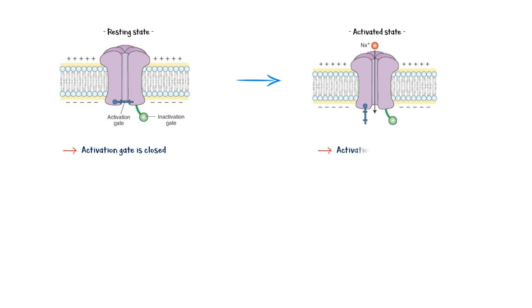Voltage-gated sodium channels have activation and inactivation gates on their intracellular side. At resting membrane potential, the activation gate is closed and the channel is not permeable to sodium ions. When the membrane depolarizes, the activation gate opens, permitting sodium ions to flow in.